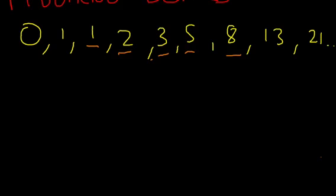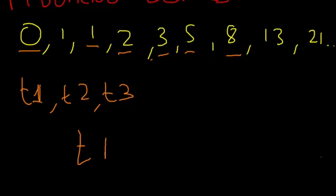Now how do you go about printing this in a program? Essentially, you should use three variables: let's say t1, t2, and t3. Now, what is the first t1? t1 initially is 0, and t2 initially is 1.